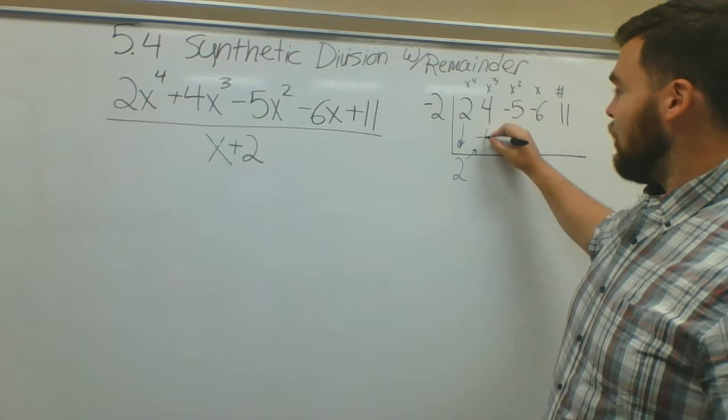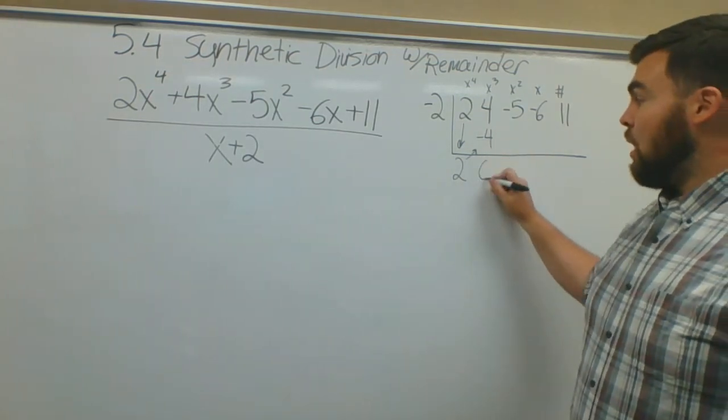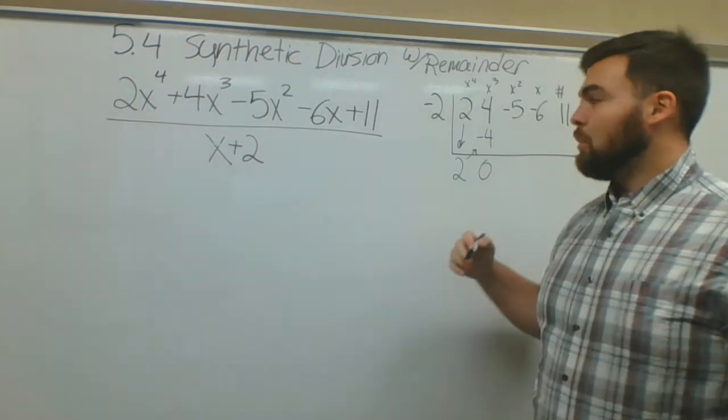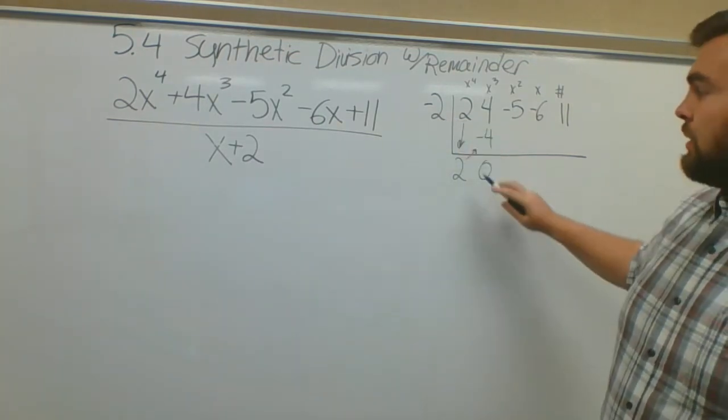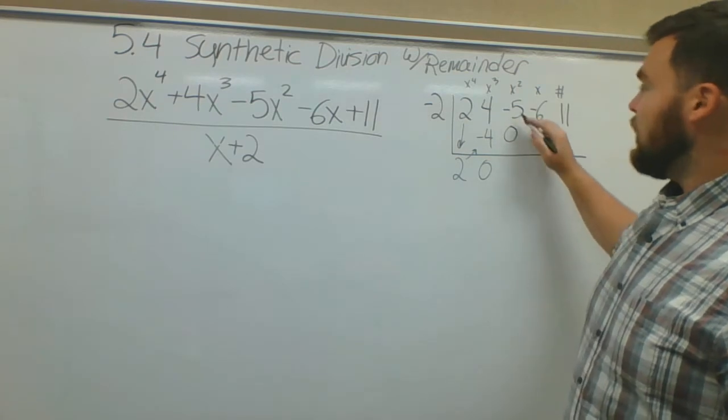Next step, multiply by k. So 2 times negative 2, I go diagonal, is negative 4. Okay, 4 plus negative 4 is 0. That's okay, that's fine. We'll talk about that in a minute. 0 times k, 0 times anything is 0, so put 0 in.